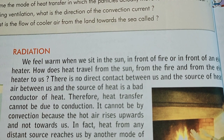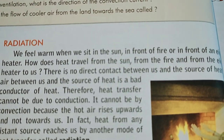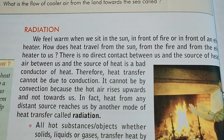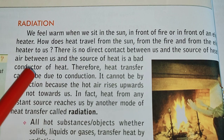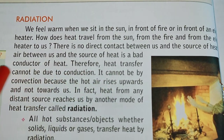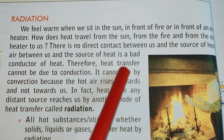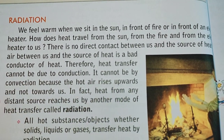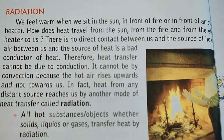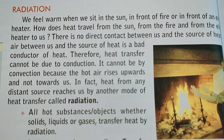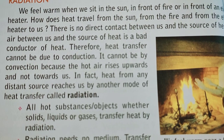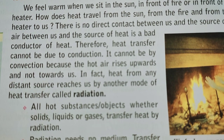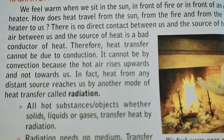How does heat travel from the sun, from the fire, and from the heater to us? There is no direct contact between us and the source of heat. Also, air between us and the source of heat is a bad conductor, so heat transfer cannot be due to conduction. It cannot be by convection either, because hot air rises upwards, not towards us. Heat from any distant source reaches us by another mode of heat transfer, which is called radiation.